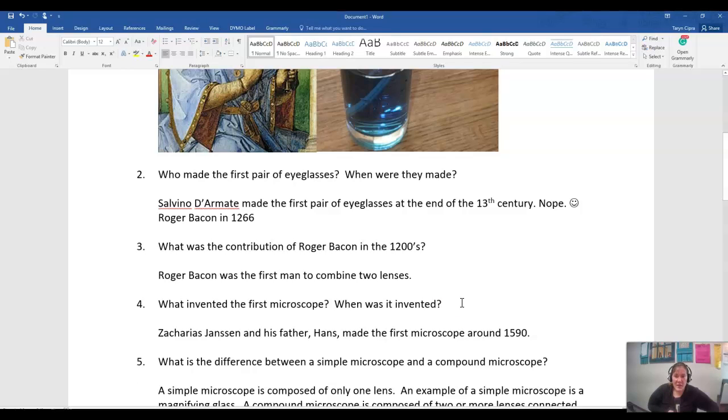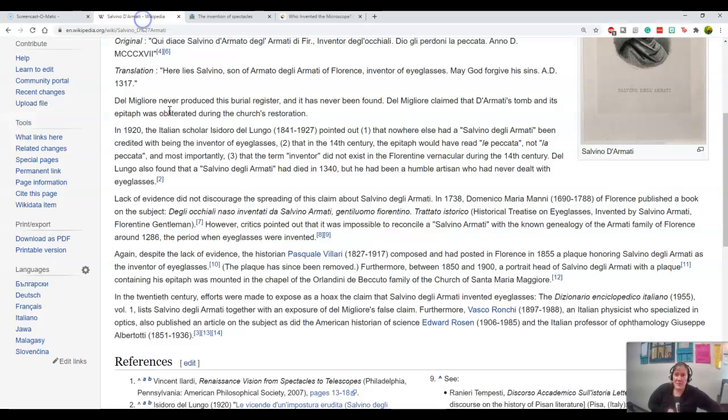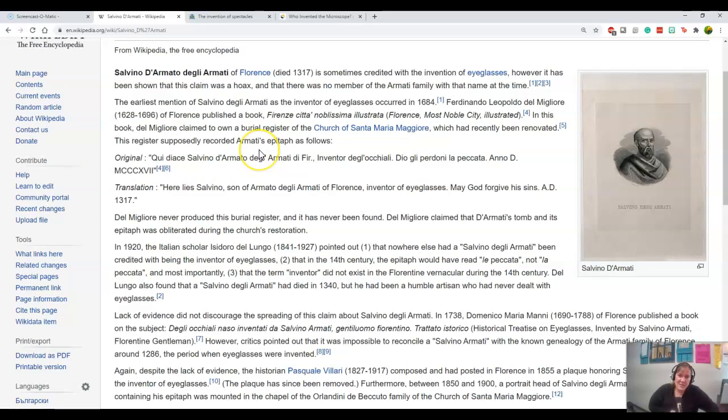Who made the first pair of eyeglasses, and when were these made? Silvino de Marte was attributed to make the first pair of eyeglasses in the 13th century, but this turns out to be false. One person perpetuated this hoax by claiming they had found an epitaph stating 'here lies Silvino de Marte, the creator of eyeglasses,' but when questioned about it, he said the epitaph was destroyed during church renovations. It turned out to just be complete bubkiss.